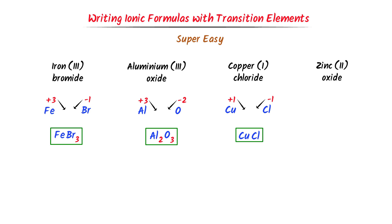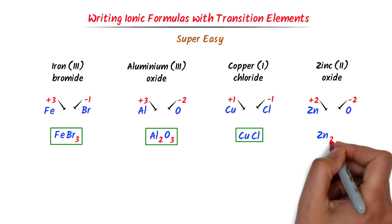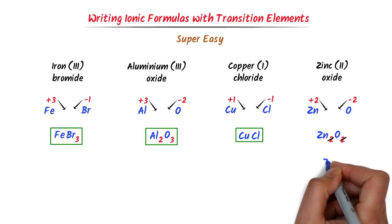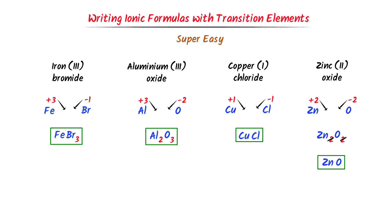In case of zinc(2) oxide, the oxidation state of zinc is positive 2 and the oxidation state of oxygen is negative 2. I cross their respective charges and I get zinc 2, oxygen 2. Remember that if the subscripts are the same — such as 2 and 2, or 3 and 3 — we always cancel them. So I get ZnO. This is the chemical formula of zinc(II) oxide.